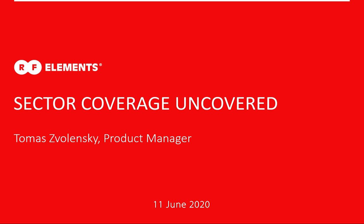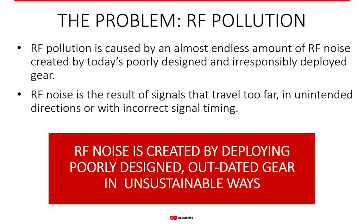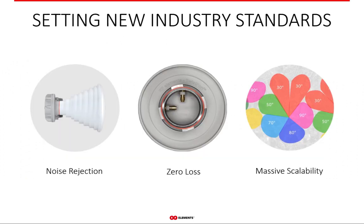At RF Elements we provide innovative solutions for modern-day WISPs. Still today, the biggest problem of unlicensed wireless networks is interference caused by using gear that is either poorly designed or deployed without any regard to sustainability, which is connected to RF noise produced by these devices. If only a few people produce noise it might not be a big deal, but if everyone does, then everybody will suffer sooner or later.